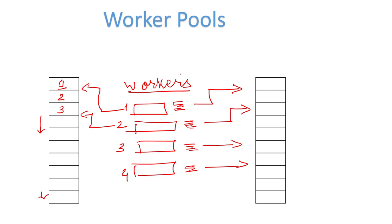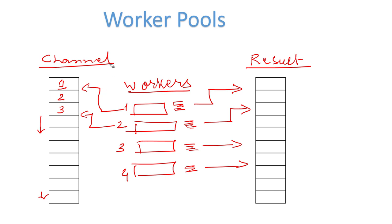In our use case we have a channel of tasks and also a channel of results. For the implementation we are using channels: we pick up the task from the tasks channel, the goroutine applies some actions and logic, then pushes the result to a result channel. This solution is far more efficient than going in a serial manner and iterating through the task list picking up one task at a time. So let's implement this using Golang.